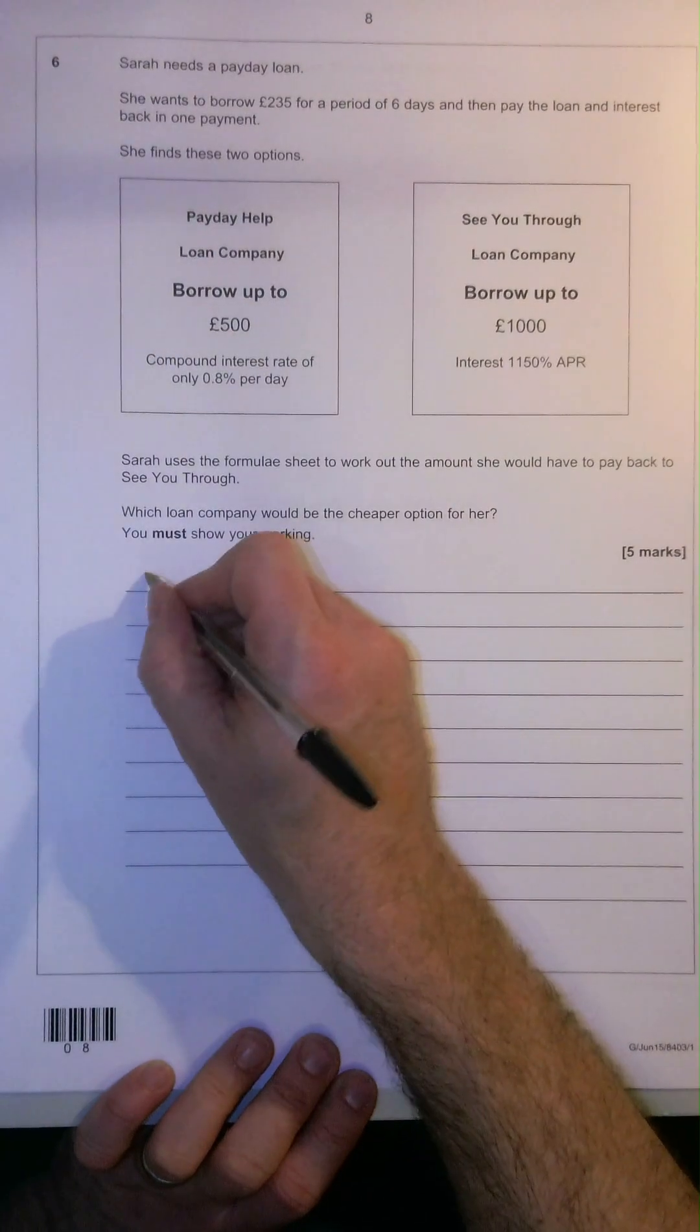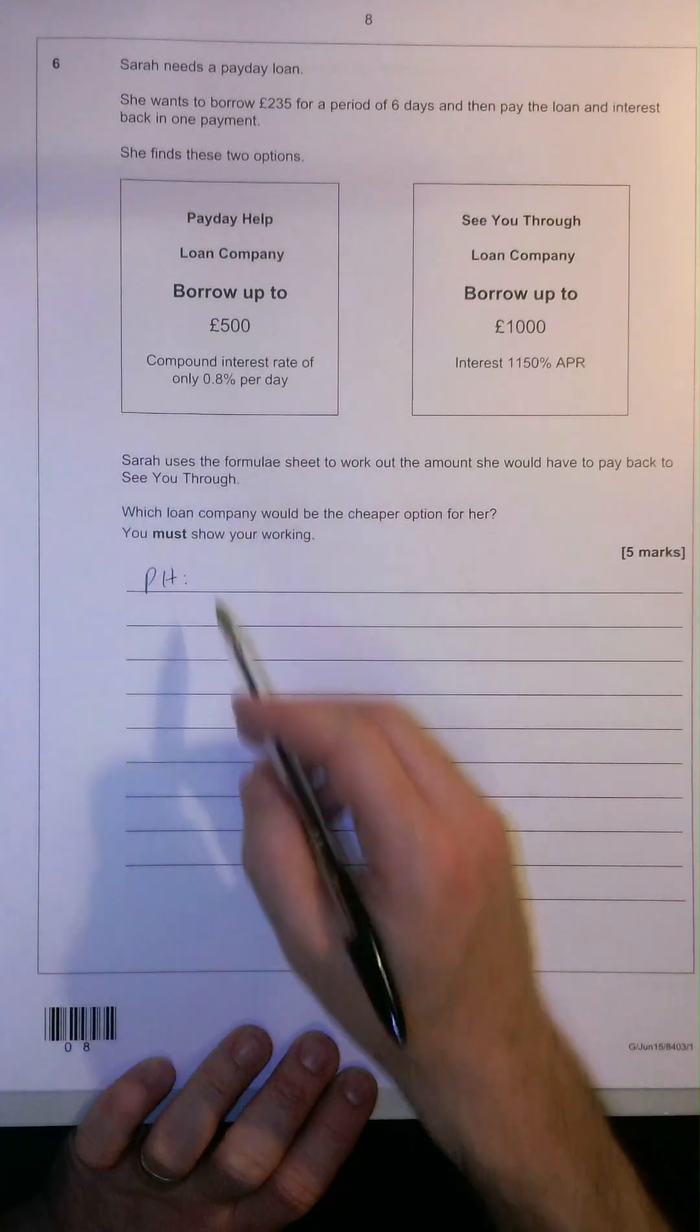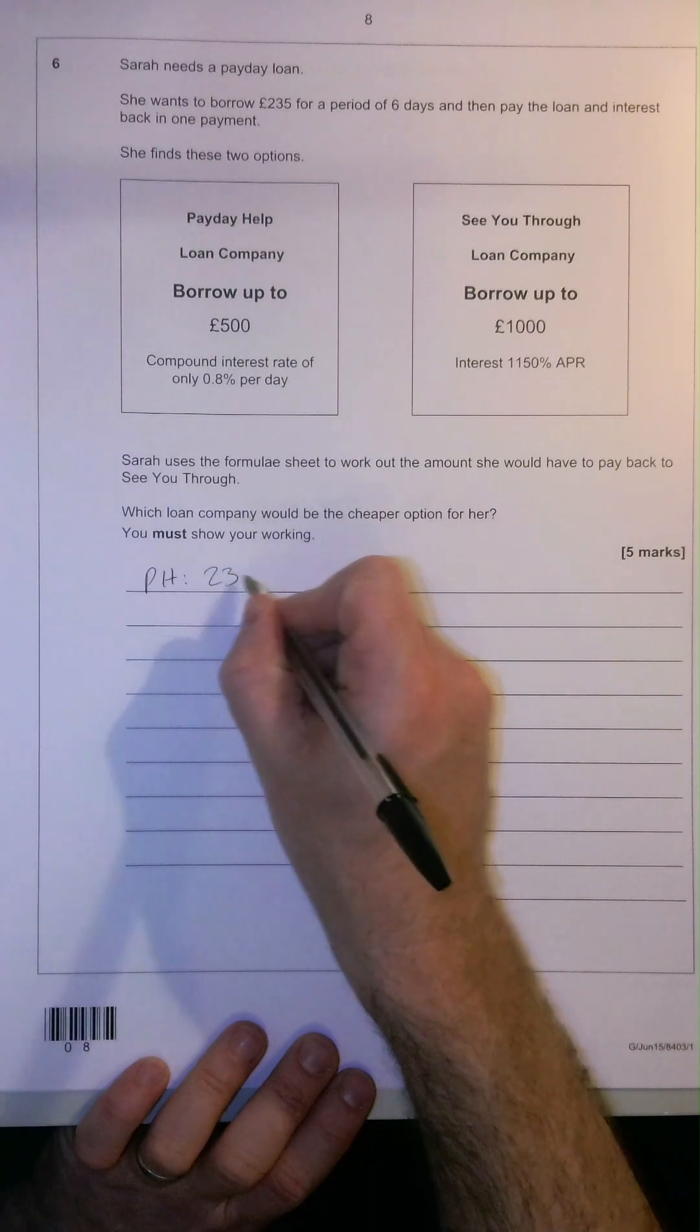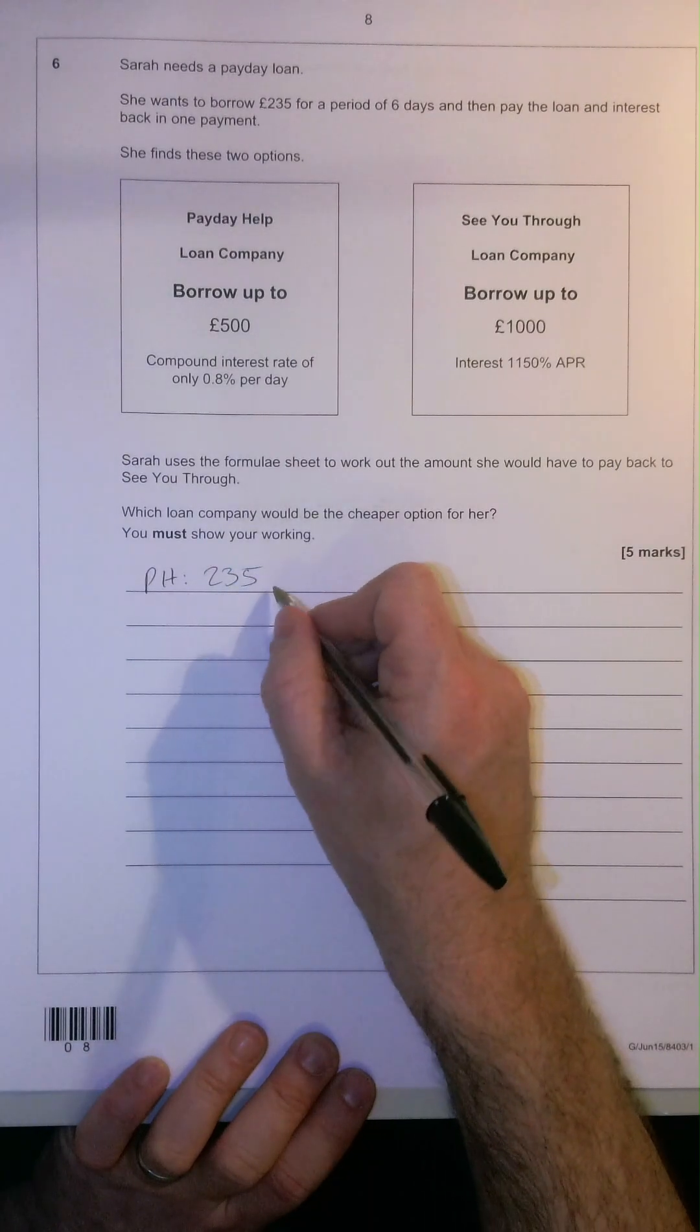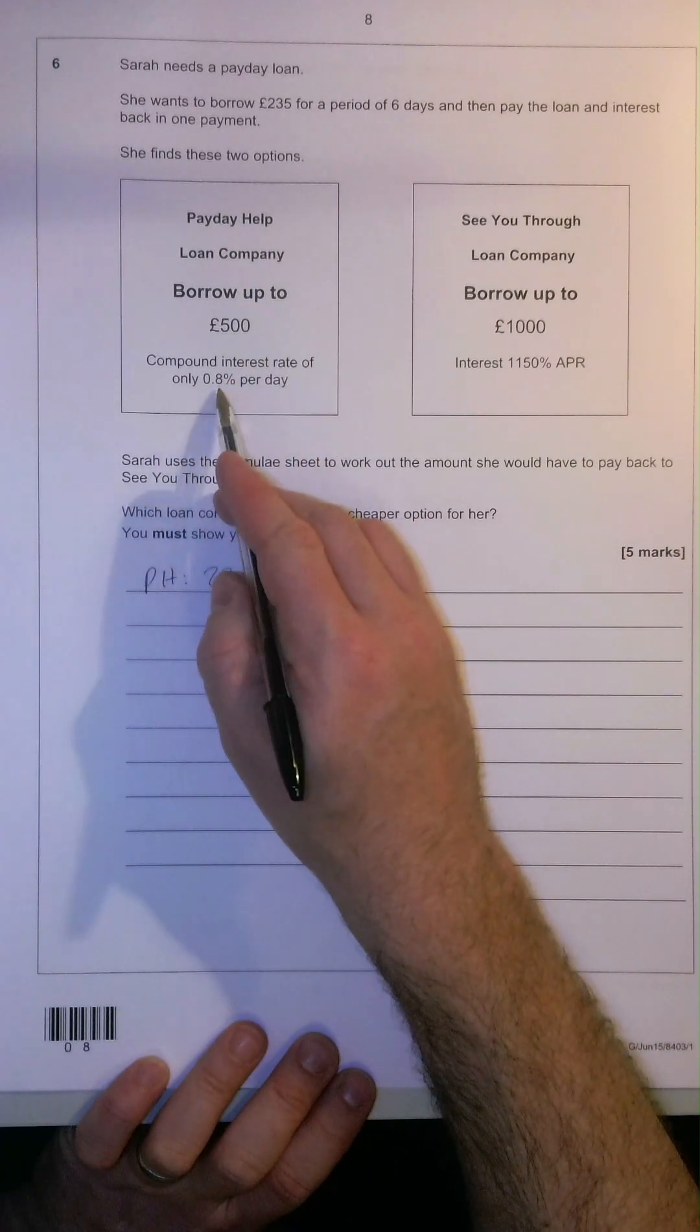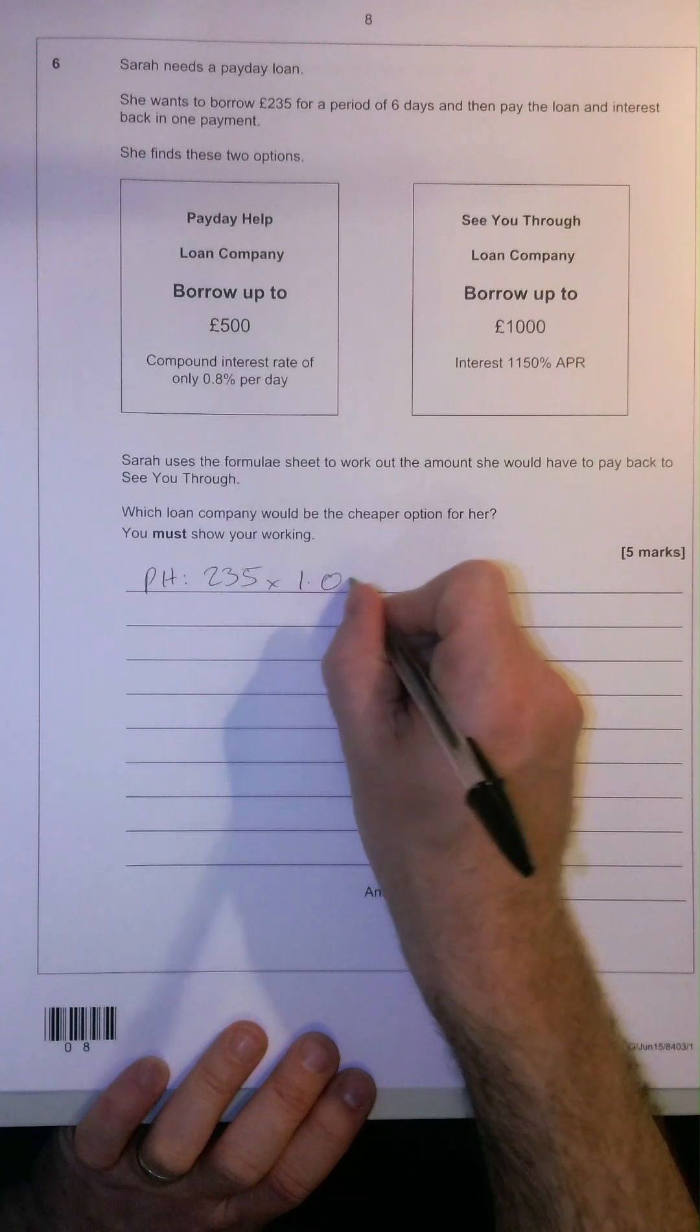Let's firstly look at payday help. So how would we actually work out how much interest she had to pay? Well, £235 is the actual amount she wants to take out and we times it by the compound interest rate 0.8%, so times by 1.008,